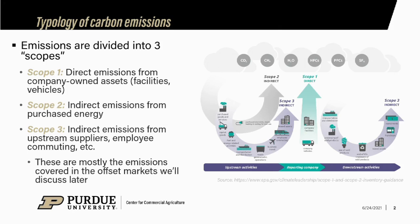We're going to start off talking about the different types of carbon emissions that your average firm might emit. Policymakers tend to divide these into three different types called scopes, and the scopes go up in order of the amount of control your firm might have over those emissions. They start off with Scope 1 emissions.